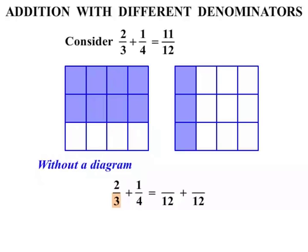For our first fraction, two thirds, the bottom number is three. To change that to twelve, we multiply by four. If we multiply the bottom by four, we multiply the top by four as well. For the second fraction, one quarter, the denominator is four. To change that four to twelve, we times by three, and do the same to the top. So we get two times four, which is eight, and one times three is three.